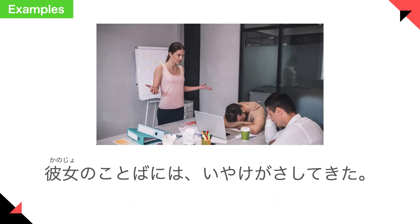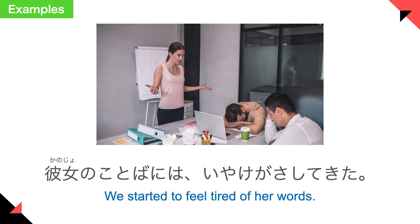Next example sentence: 彼女の言葉には嫌気がさしてきた。 We started to feel tired of her words. 彼女の言葉 means her words, and 嫌気がさす means to feel tired of or to be sick of.